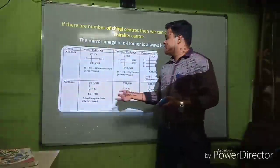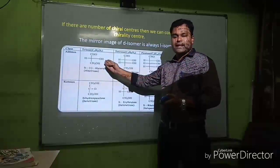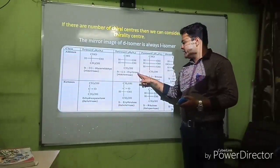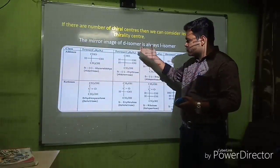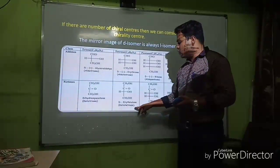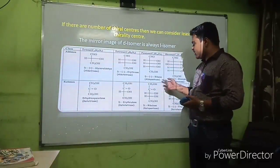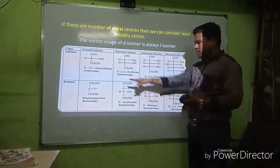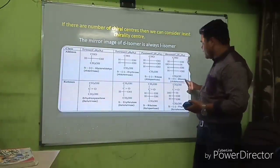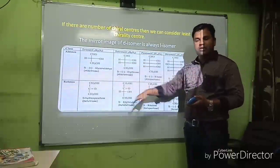Common names: trioses (3C aldose) are called glyceraldehyde — with OH on right-hand side it is D-glyceraldehyde. Tetroses (4C) are called erythrose. Pentoses (5C aldose) are called ribose; the ketose is also called ribulose. Hexoses (6C aldose) are called glucose; the ketose is called fructose. Glucose and fructose have the same molecular formula but different functional groups — glucose is an aldose and fructose is a ketose.